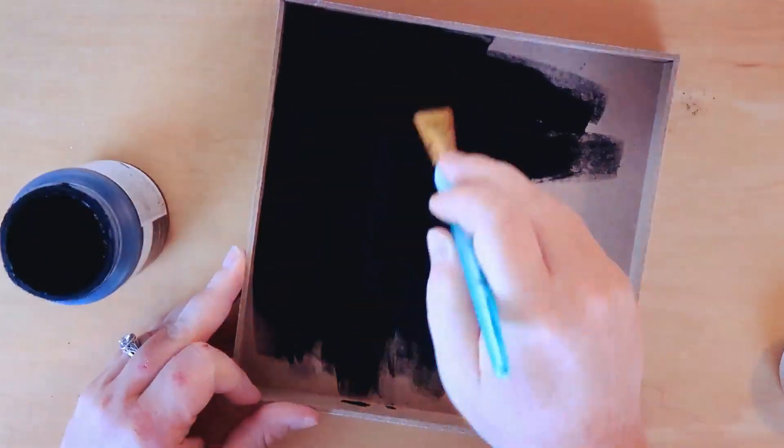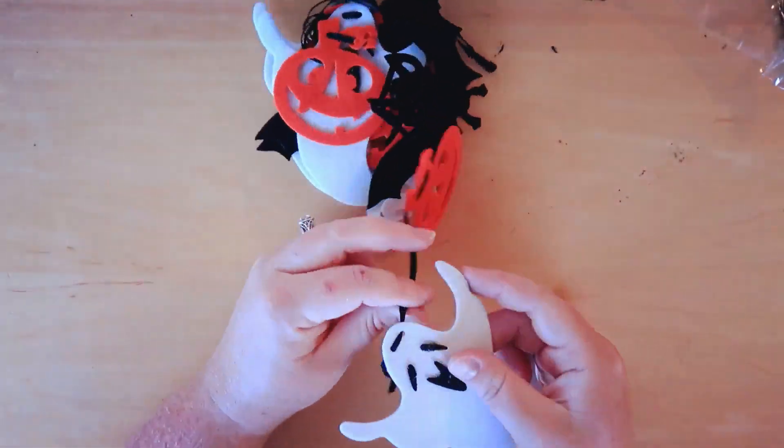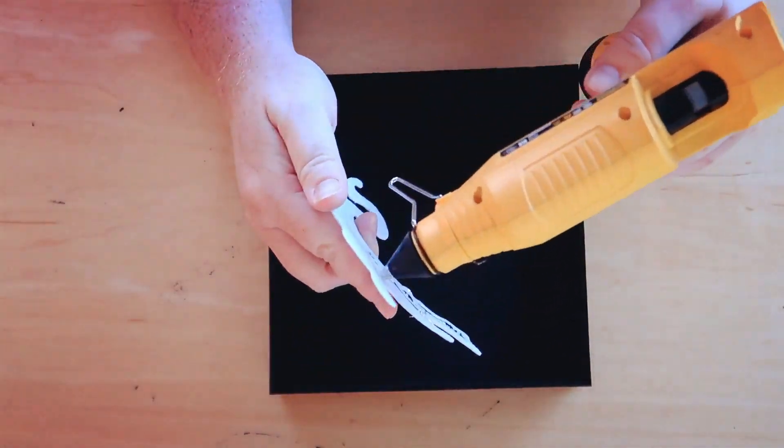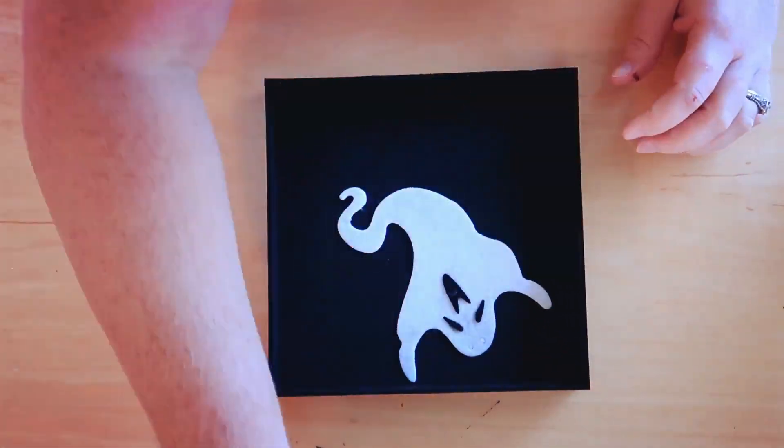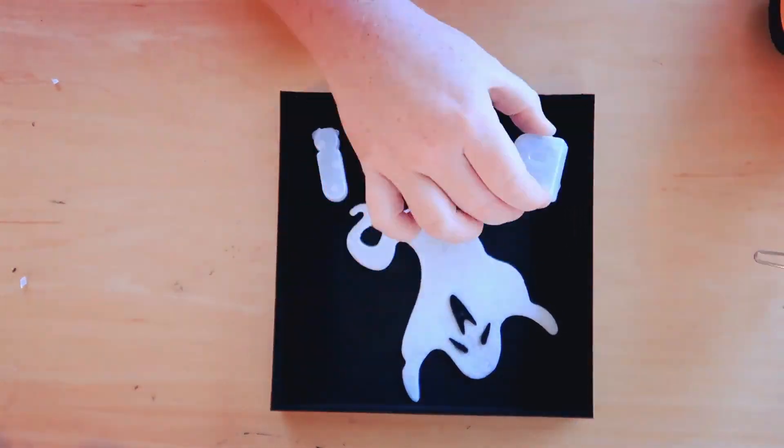Taking this little garland that I picked up from Dollar Tree as well, I'm gonna be taking the little ghost and just gluing him directly inside that little sign that we painted black. Now taking the BOO letters I'm just kind of spacing them out and gluing those down as well.